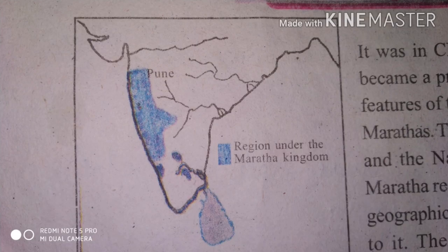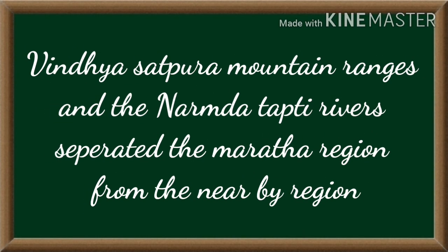Look here — this is the map of the Maratha kingdom. The special geographical features of Maratha are the Vindhya and Satpura mountain ranges, and the Narmada and Tapti rivers, which separated the Maratha from the nearby region and gave natural protection to the kingdom. The Marathi language and literature instilled a sense of unity among them.